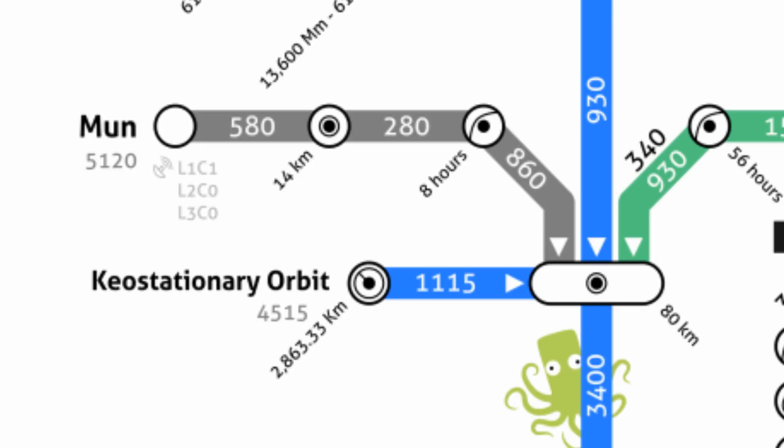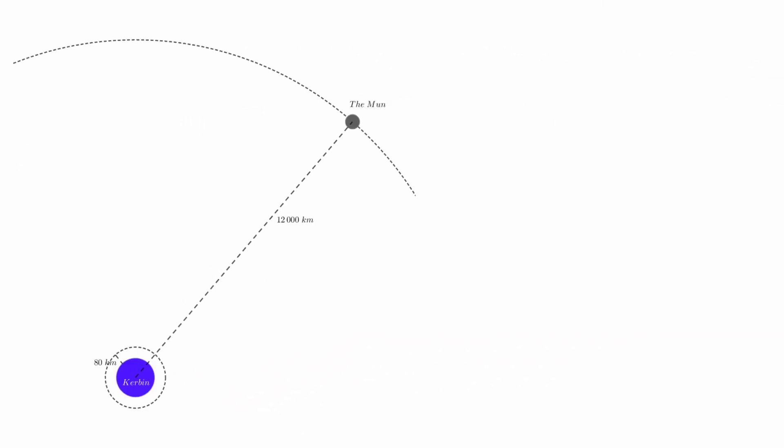With that, let's tackle the moon. We'll start by taking a look at the numbers provided on this delta V map, which you can find at the KSP wiki — link in the description. According to this, the transfer from an 80 kilometer orbit about Kerbin to the moon should cost about 860 meters per second. It should then cost a further 280 meters per second to get our capture into a 14 kilometer orbit about the moon. Now let's do this ourselves and see how we compare.